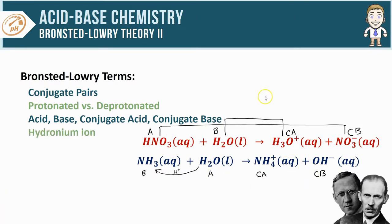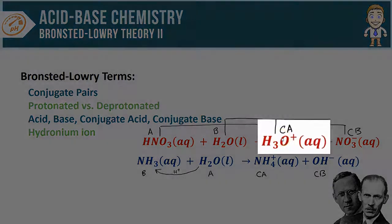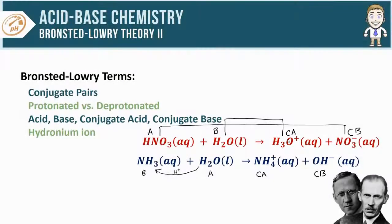Hydronium ion is the name given to this very important H3O+ particle. Remember, that's the particle produced by any acid in water that's actually causing the solution to be acidic and giving it a lower pH.